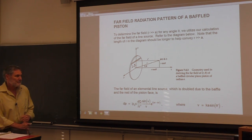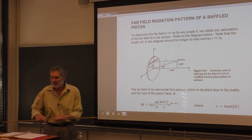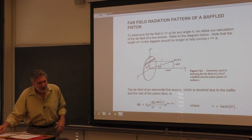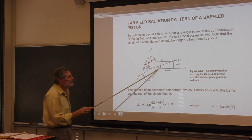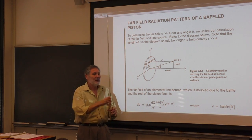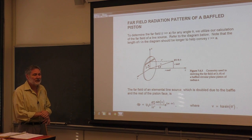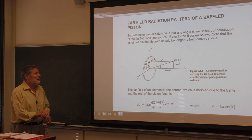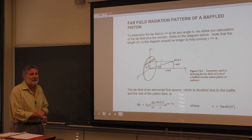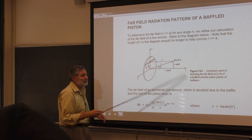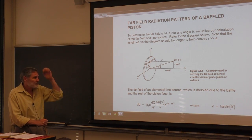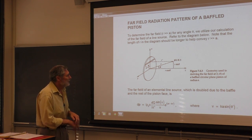Yesterday we looked at a piston in an infinite rigid baffle — a circular piston surrounded by the baffle. We looked at the radiation field on the axis (the z-axis, the axis of symmetry) and solved for the pressure field exactly. It behaves very interestingly, with zeros and maxima due to interference, which points out an additional requirement for the far field that only comes in when the wavelength is small.